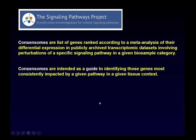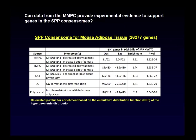Neil and I started thinking about how we could use MMPC data to help with the SPP project. The first question was: can MMPC data provide experimental evidence to support genes in these consensomes? As a proof of principle, we looked at the consensome for mouse adipose tissue — 26,277 genes. We asked: if we search the MMPC for phenotypes related to body fat mass, how many of the returned genes are in the top 10% (90th percentile) of the consensome? We found 22 genes in the MMPC with those designations, and 11 of those were in the top 10% for that adipose tissue consensome.